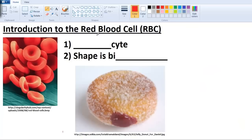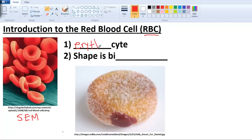Introduction to the red blood cell. There's a bunch of red blood cells here. Red blood cell is abbreviated RBC. Also, this is a scanning electron microscope view of the red blood cell - you can tell because it has a 3D shape. Another name for a red blood cell is an erythrocyte.